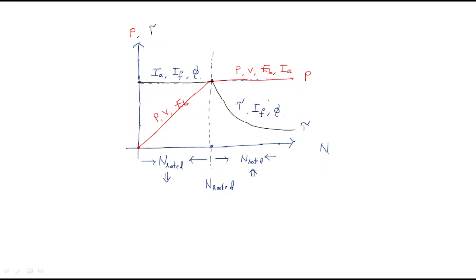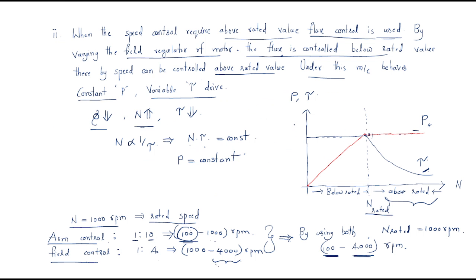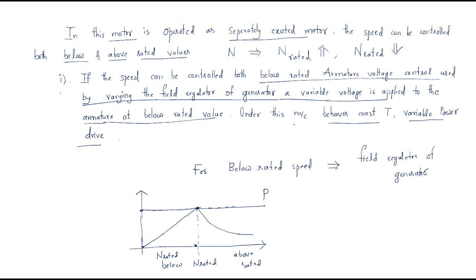The armature current is shifted, and the remaining parameters are controlled accordingly. This is the overview of the Ward Leonard speed control method. I hope all of you understood the session. Thank you.